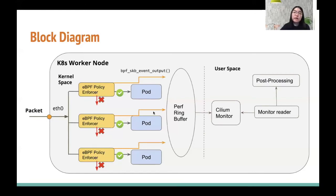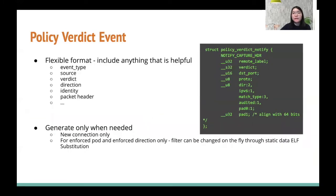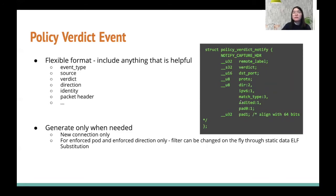What data can we pass to the perf ring buffer? It's actually very flexible and totally decided by us. We can include anything that's helpful, such as event type, source, verdict, direction, etc. The data we use for the policy verdict event is shown on the right, where the notify capture header is a common header that contains the event type, source ID, etc. The additional fields are customized to our needs. This data is passed in binary format to user space, so we need to make sure that the structure used at the receiver side is aligned to what's defined here.